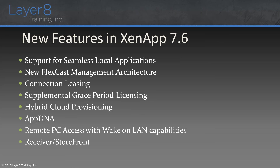The 7.6 version of the XenApp XenDesktop component — because they are technically the same product — all the infrastructures are going to be identical for the deployment, the difference being your licensing. Some of the newer features from the original deployment of 7.1 and 7.5 that came out with 7.6 include additional support for seamless local applications — running an application on the user's local machine but appearing within their desktop session on a remote server.